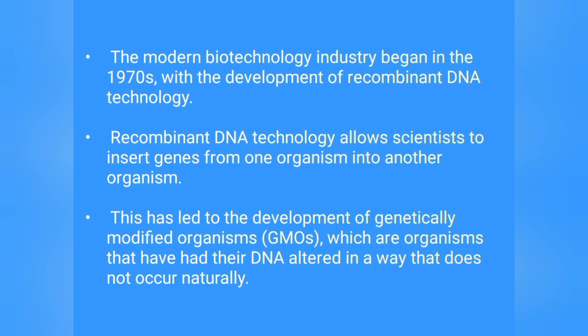The modern biotechnology industry began in the 1970s with the development of recombinant DNA technology. Recombinant DNA technology allows scientists to insert a gene from one organism into another organism. This has led to the development of genetically modified organisms — organisms that have their DNA altered in a way that does not occur naturally.